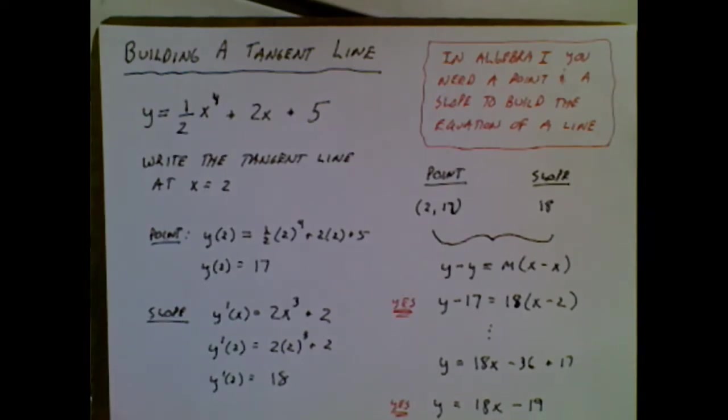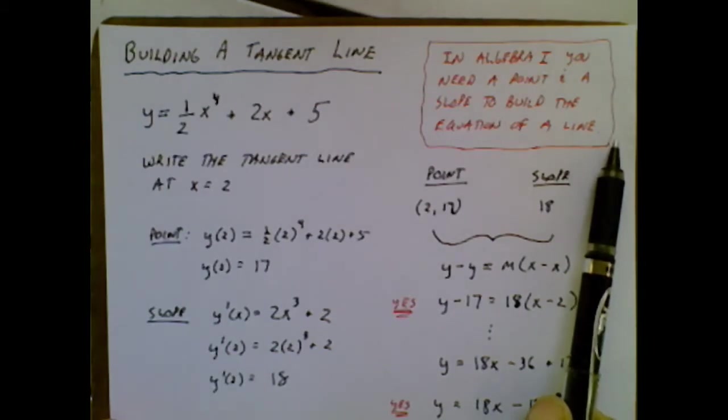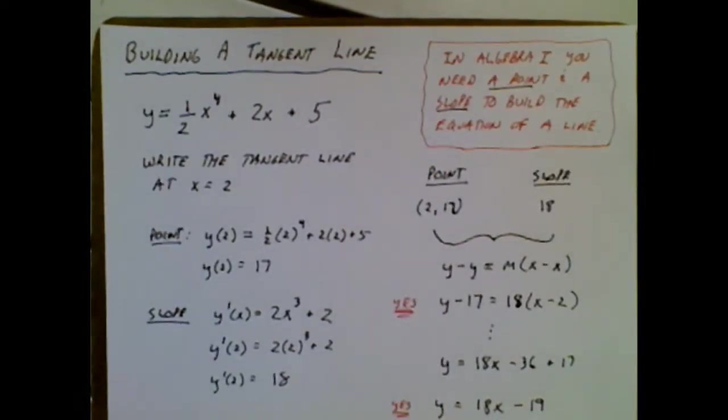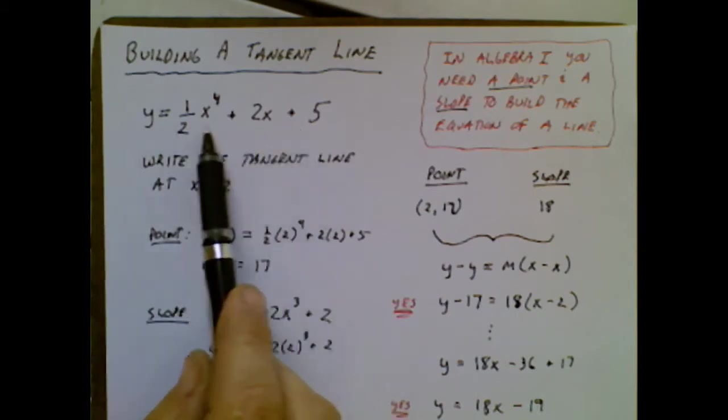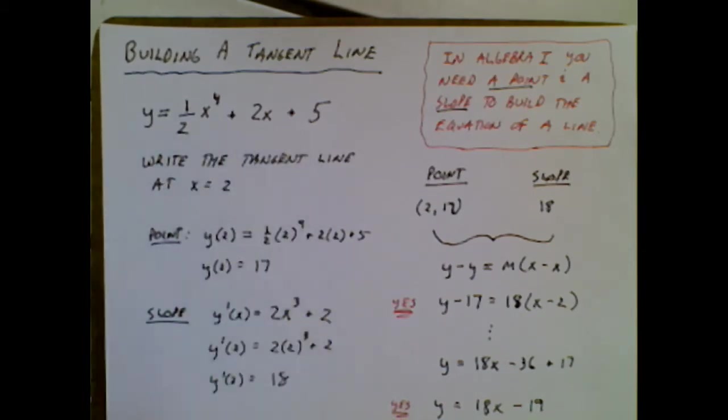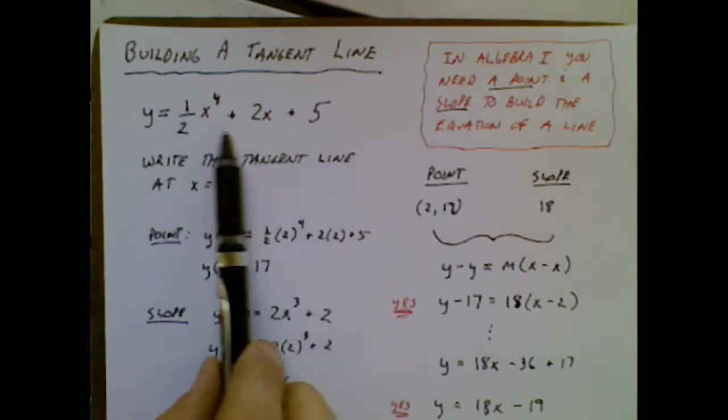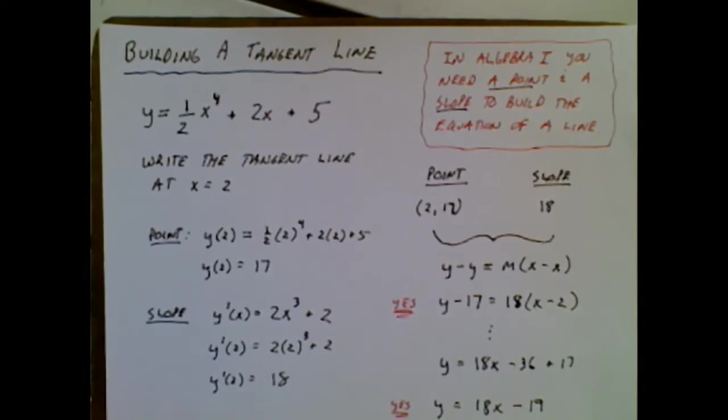One thing to keep in mind as we go through this is in Algebra 1, every time you needed to build a line, you needed a point and you needed a slope to get that equation of the line. We're going to use the same idea here. We're going to start off, as we always do in the beginning of calculus, using something that will use the power rule. Once you learn more derivative rules, we'll be doing the same thing with much more complicated equations. Here's something that's going to look like a parabola opening upward, and we want the tangent line at x equals 2. According to our algebra upbringing, we need a point and a slope.